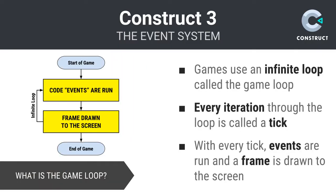So how does it all work? Behind the scenes, there's an infinite event loop, sometimes referred to as the game loop, which is constantly running. Every time or iteration through the loop is called a tick. For every tick, Construct evaluates all the events in the game, updates the game's data, and creates the frame to be drawn to the user's screen. The number of these so-called ticks, and hence the number of frames drawn to the user's screen, varies depending upon the system upon which the game is being played, and other factors.